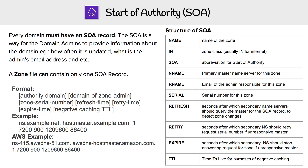When you have a domain name, you're going to have a bunch of records that tell it what to do. One that's very important and absolutely required is the SOA — the Start of Authority. The SOA is a way for the domain admins to provide additional information about the domain.